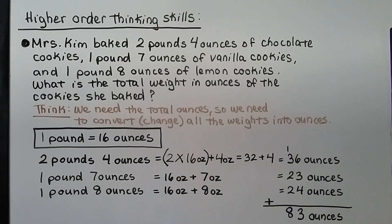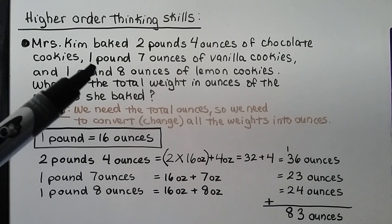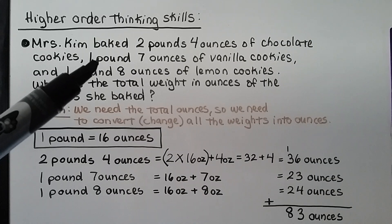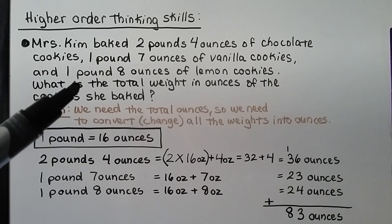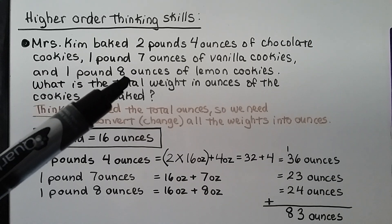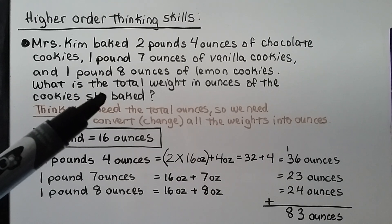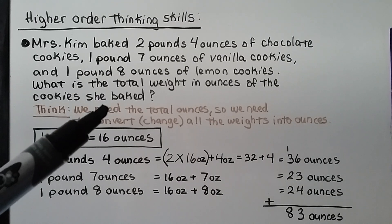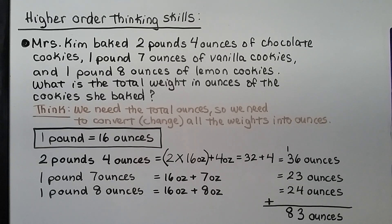Higher order thinking: Mrs. Kim baked two pounds four ounces of chocolate cookies, one pound seven ounces of vanilla cookies, and one pound eight ounces of lemon cookies. What is the total weight in ounces of all the cookies she baked? We need to convert all weights into ounces, since one pound equals 16 ounces.